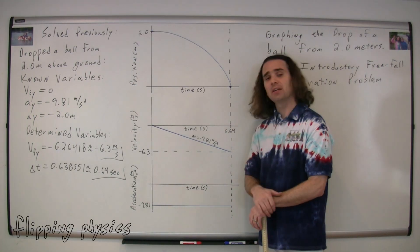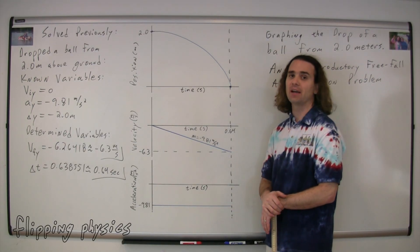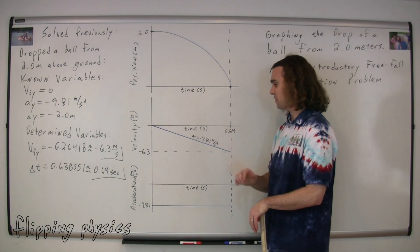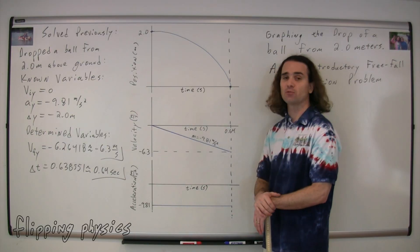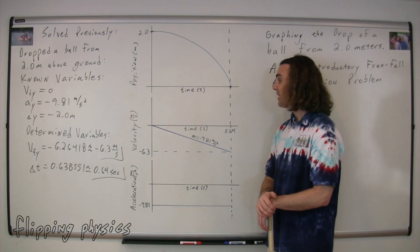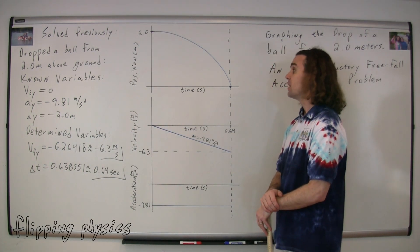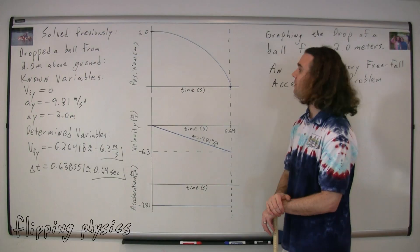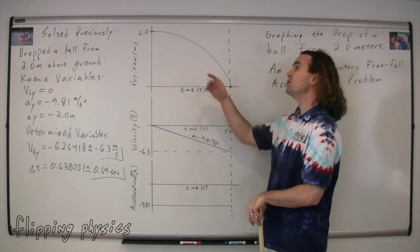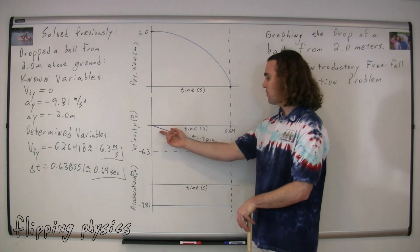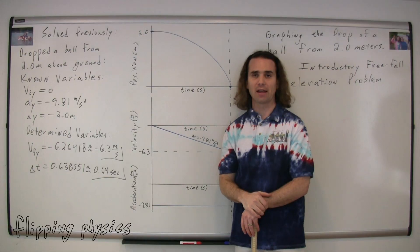Let's do a quick review. We started with the acceleration as a function of time graph because it was the easiest. The acceleration was constant, and therefore we have a horizontal line at a value of negative 9.81 meters per second squared. Coming to the velocity as a function of time graph, because the slope of a velocity versus time graph is acceleration, we knew the slope was going to be constant at negative 9.81 meters per second squared. We knew the initial velocity was zero, therefore we could draw the line. Because the slope of a position versus time graph is velocity, we started with an initial slope of zero, started at two meters, ended at zero meters, and as time went by, the velocity and the slope got to be more and more negative.